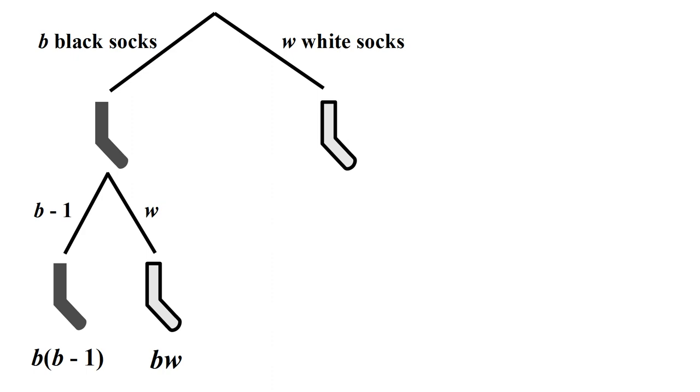Now let's consider the branch if we drew a white sock. We could then draw a black sock. There are B black socks remaining. If we multiply W and B, we get BW, which is the number of ways that we could get a white sock and then a black sock.